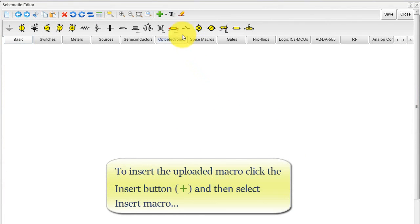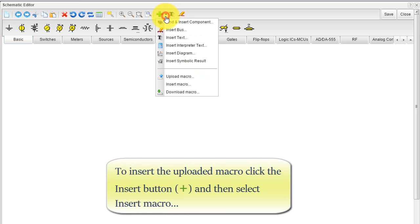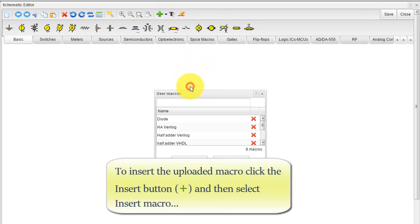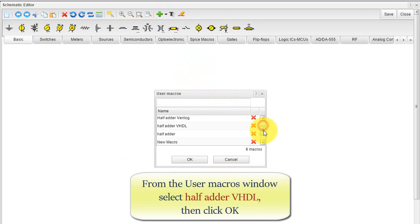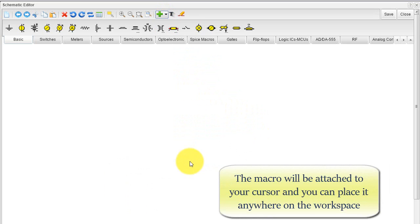To insert the uploaded macro, click the Insert button, and then select Insert Macro. From the User Macros window, select Half Adder VHDL, then click OK. The macro will be attached to your cursor, and you can place it anywhere on the workspace.